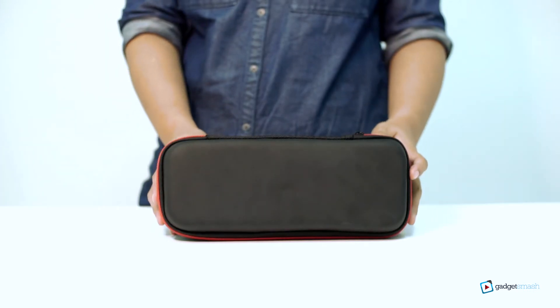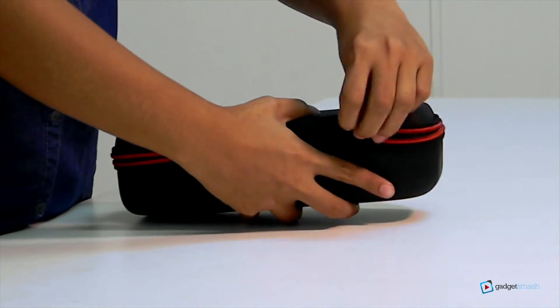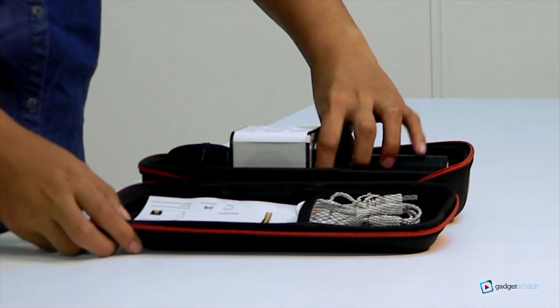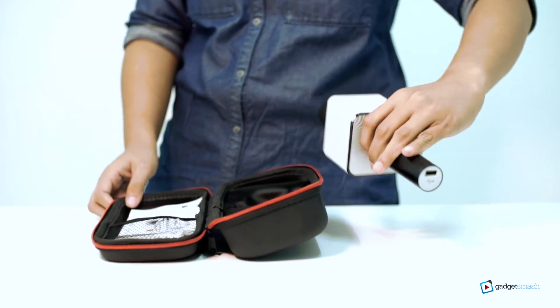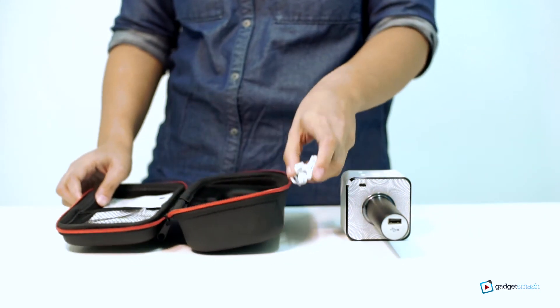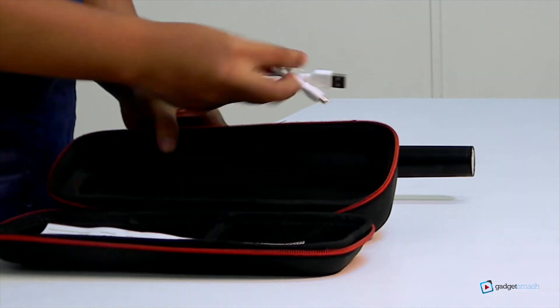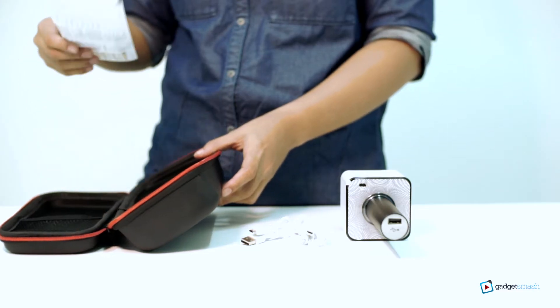This is the Q7 hard case, the Q7 microphone, an audio jack, USB cable for charging, and the manual.